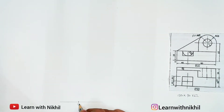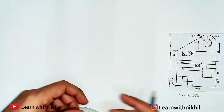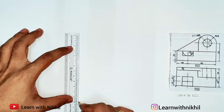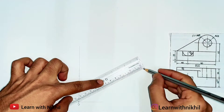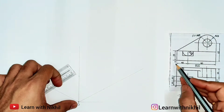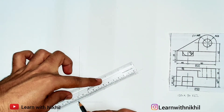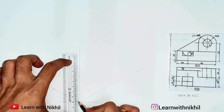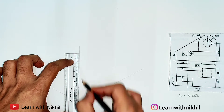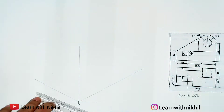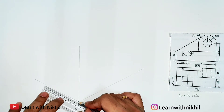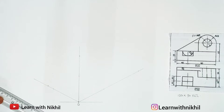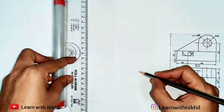Now using these three dimensions we will plot the rectangular box. From point O we will draw three angles — 30 degrees, 90 degrees, and 30 degrees — through which we will draw light lines. From point O, on the right side you have 120 millimeters, so here I am marking 120 millimeters. The height of the figure is 90 millimeters, so here 90 millimeters. The depth of the figure is 28 plus 34, that is 62 millimeters, so here 62 millimeters.